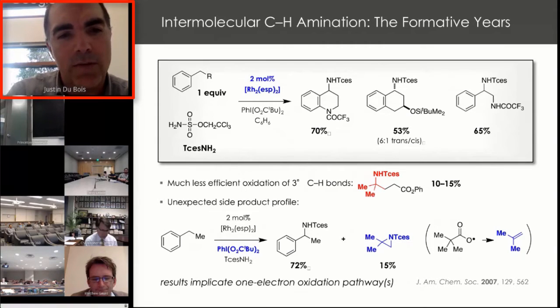When we started this work, we were fortunate that with the advent of Rhodium ESP, we were able to show that we could indeed get reasonable levels of oxidized products starting with simple benzylic substrates, using a nitrogen source that could not oxidize itself, the trichloroethoxy sulfonamide. One of the most important features of this reaction is that we were using a single equivalent of the substrate.